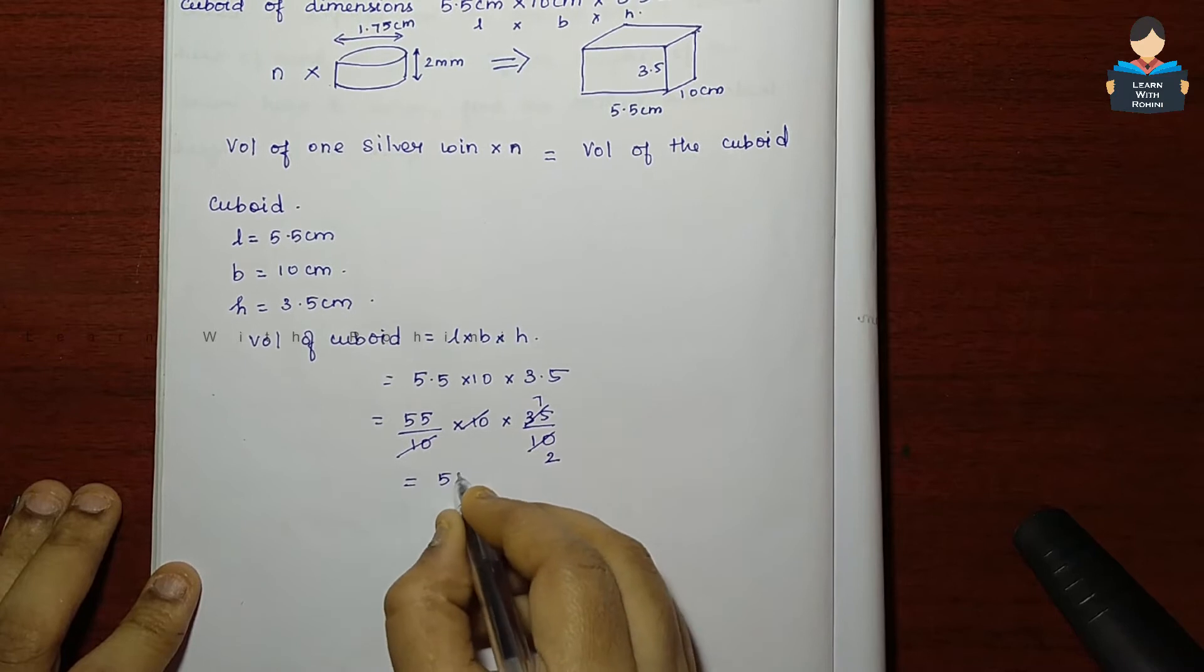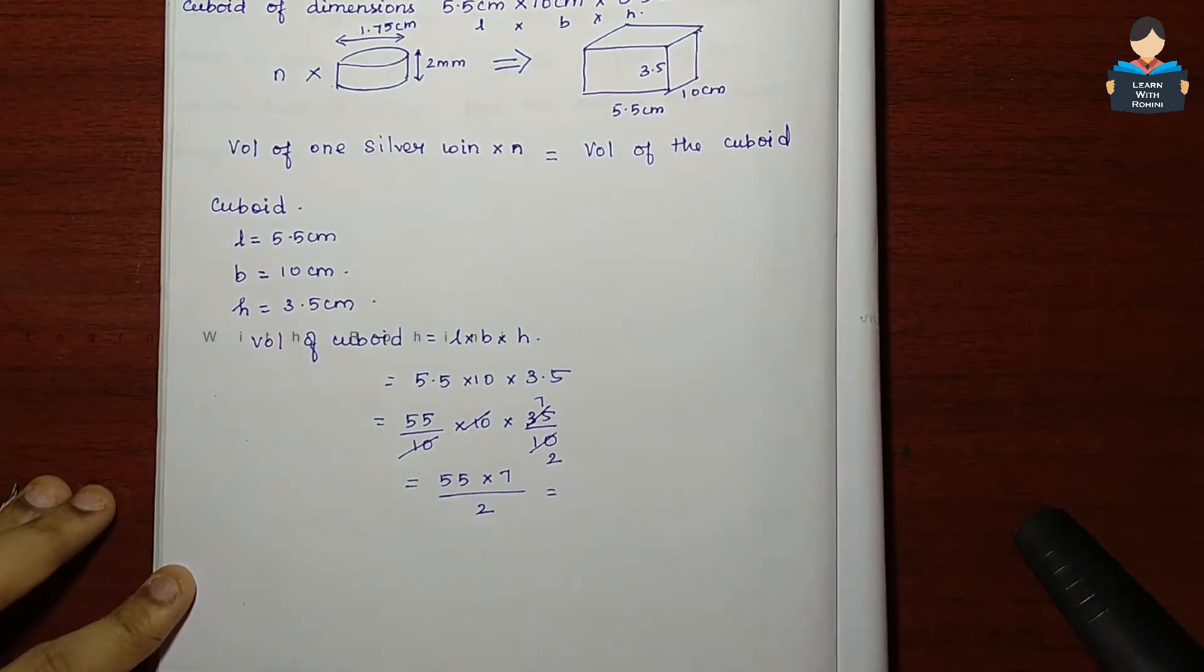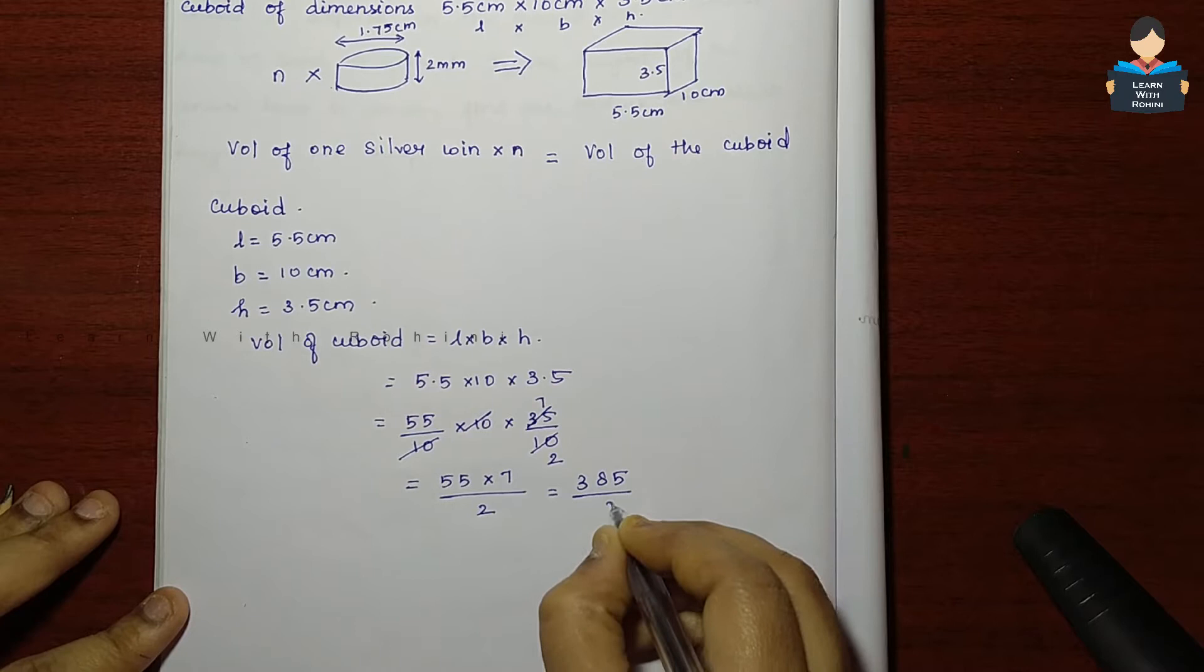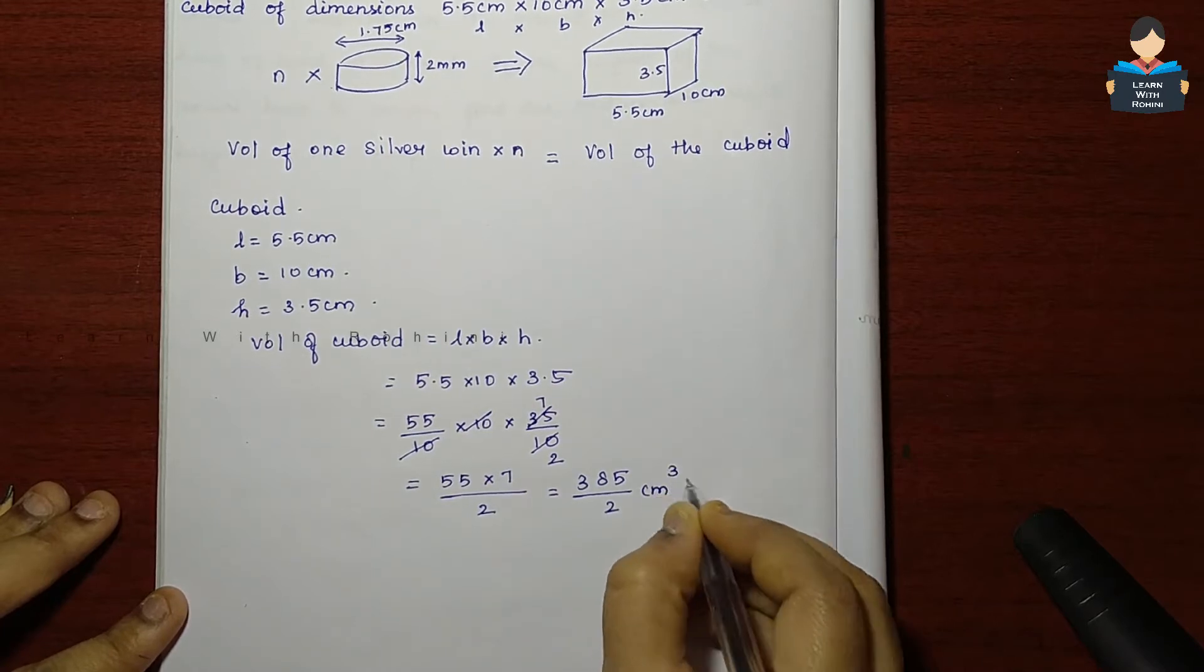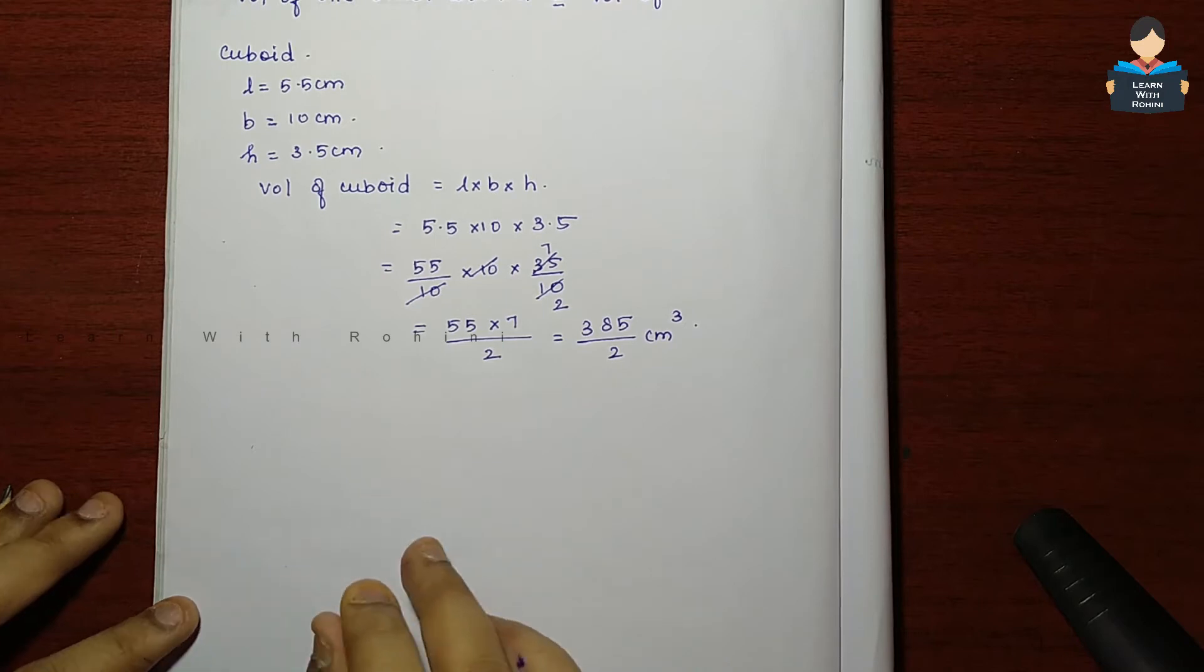So volume of cuboid equals 385 by 2 cm cube.